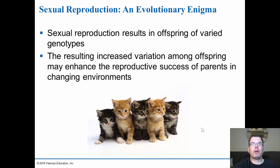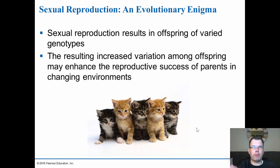Sexual reproduction results in offspring of varied genotypes. Looking at kittens from the same parents, you can see variance: one with a white chest, one orange or calico, one with a chocolate brown chest, another calico, and a tiger-striped one. They all look different, have different personalities and traits — this variation enhances the survival chances of offspring facing environmental changes, making reproductive success more likely.